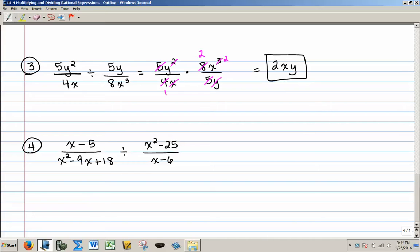And for my last example here, again, I will have to change this to a multiplication and flip my second one. I'm also seeing that I have a trinomial here that needs to be factored and a binomial here that needs to be factored. So my first fraction is going to be x minus 5 over two numbers that multiply to 18 and add to a negative 9 are going to be a negative 3 and a negative 6.